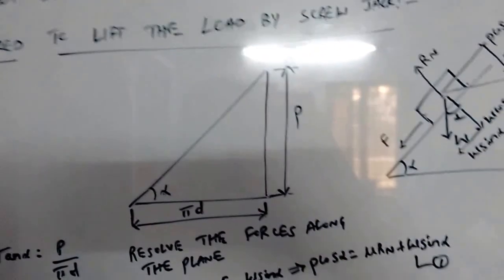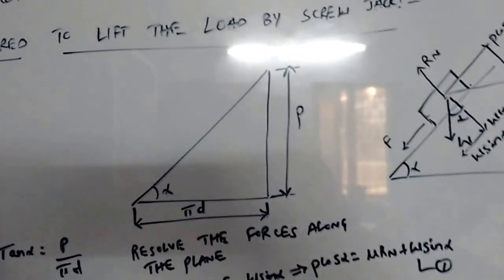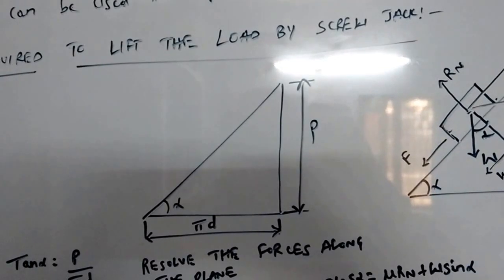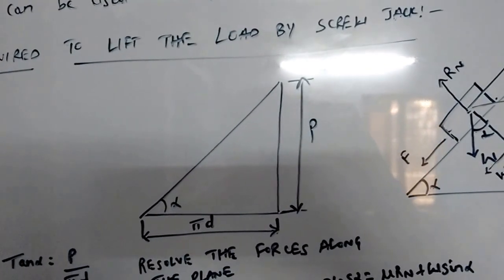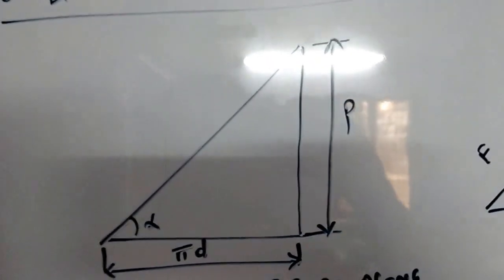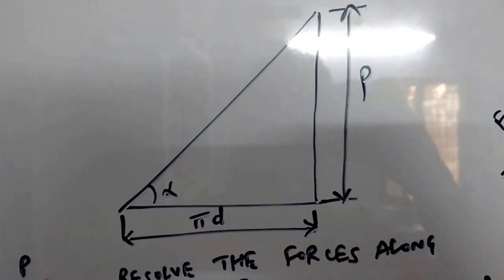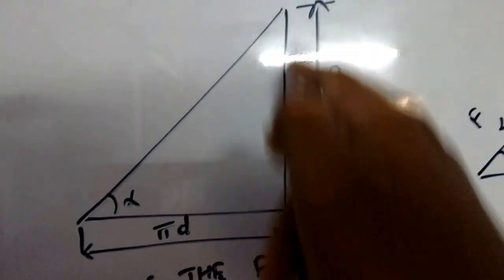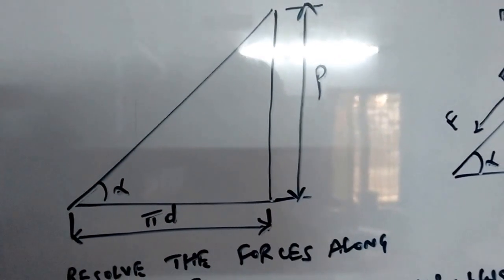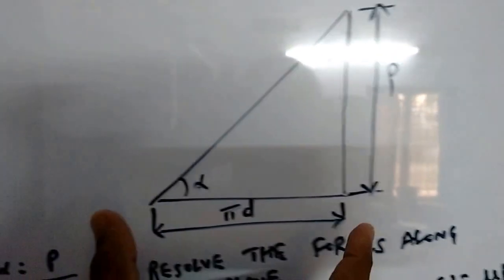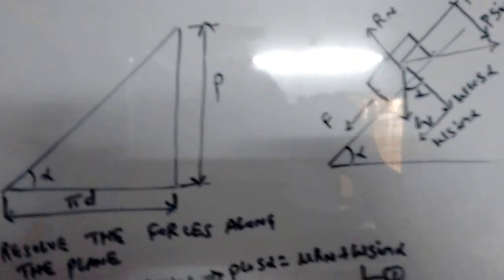When you unwind the screw from the screw jack, it looks like an inclined plane. Consider this inclined plane — when you unwind it, the distance measured along the base gives the pitch of the screw, and the other dimension gives the pi*d value.